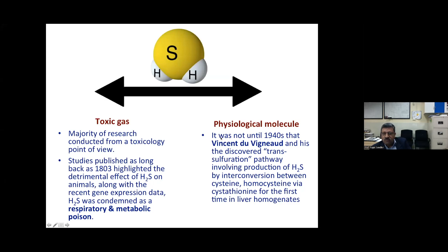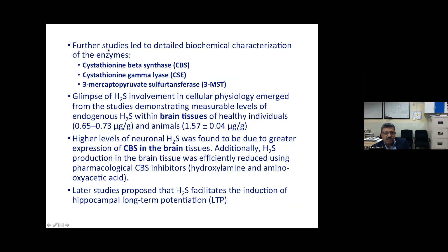The physiological role of this molecule was not known until 1924, when Vincent du Vigneaud discovered the trans-sulfuration pathway, which produces H₂S in cells. Amino acids cysteine and homocysteine are involved in this interconversion, with an intermediate called cystathionine. This was demonstrated in vitro using liver homogenates, showing H₂S production for the first time from a biological system — indicating there was a metabolic pathway generating H₂S.